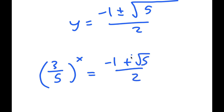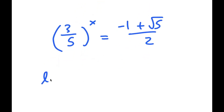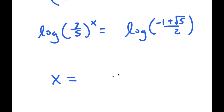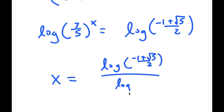The reason why (negative 1 minus the square root of 5) over 2 doesn't work is because that's negative, and you can't raise a positive number to a power and get a negative result. So taking the log on both sides, I get x equals log of (negative 1 plus the square root of 5) over 2, divided by log of (3 over 5). So this is my final solution.